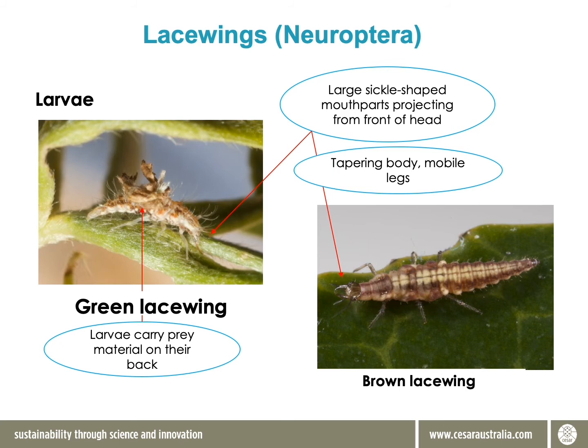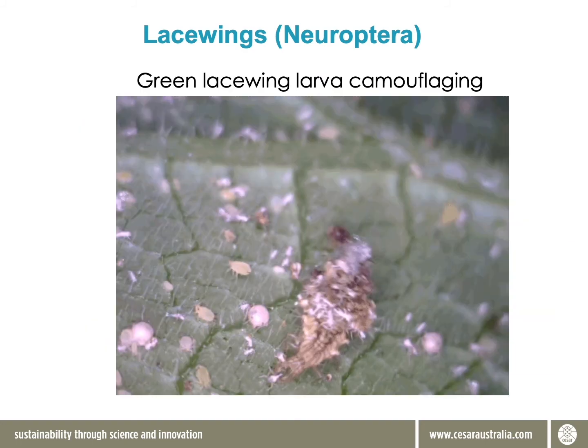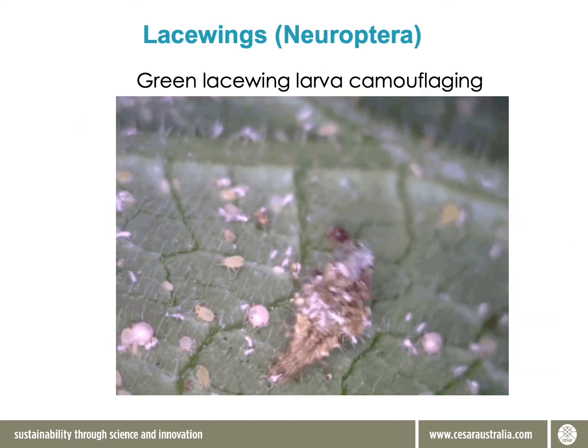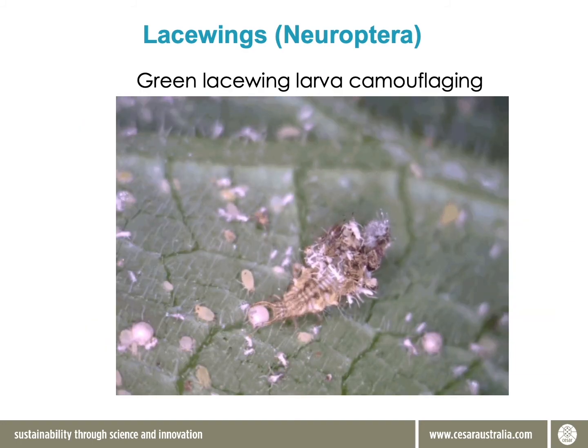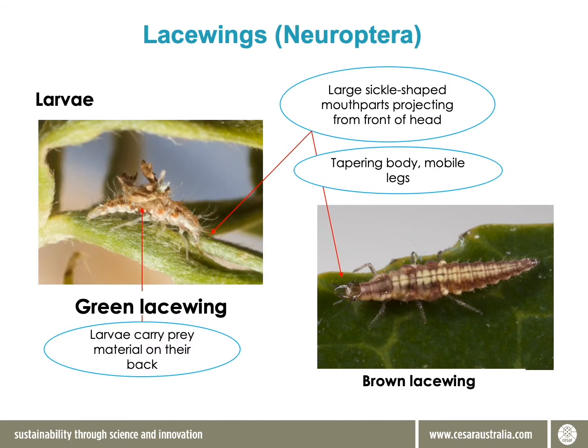The larvae have sickle-shaped mouthparts that stick out in front, and they'll prey on aphids, mites, caterpillar eggs, and small caterpillars — they won't go for larger prey. This is a green lacewing larva, and you might notice it looks quite different from the brown lacewing larva shown here.